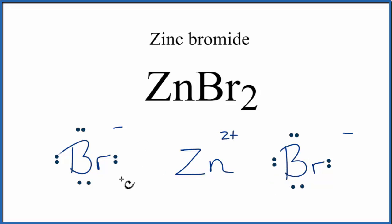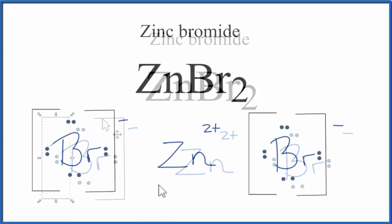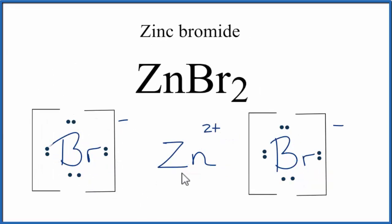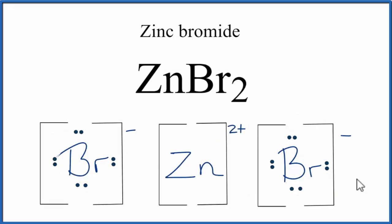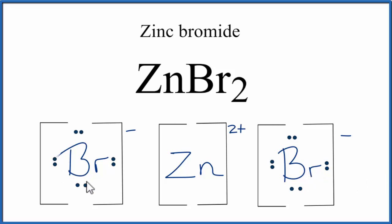We should put brackets around the bromide ion here to show that it's an ion. You'll often also see brackets placed around the metal, the positive ion. And that makes this the Lewis structure for ZnBr2, zinc bromide. Do note that this is what we call a formula unit. ZnBr2 is normally found as a crystal, made up of a number of repeating formula units.